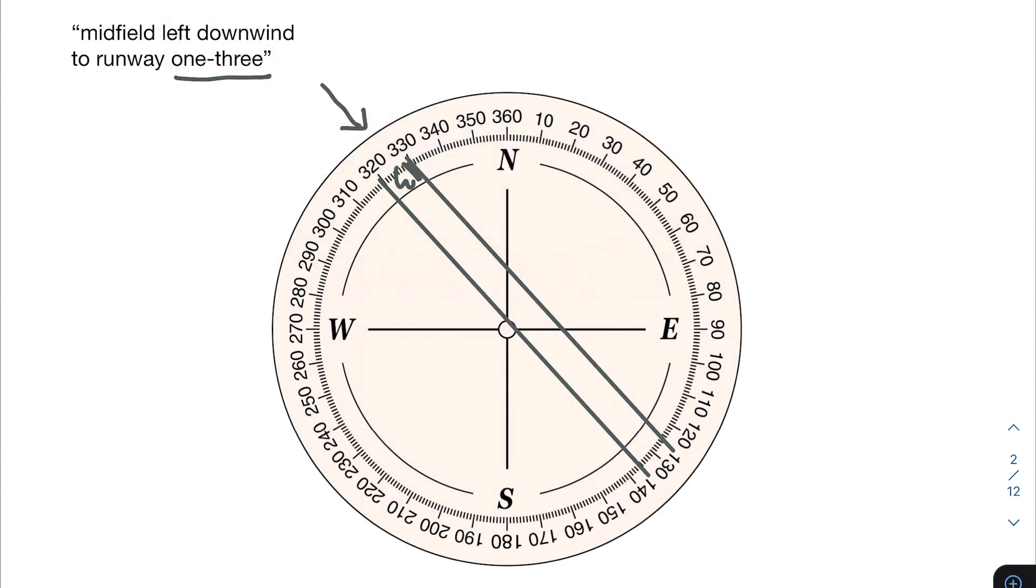As I mentioned before, here is our downwind leg. This would be our base leg. This would be our final leg. So if our plane is midfield left downwind, so midfield, remember that means that we're in the middle of the runway. We've got the same number of runway in front of us as we do behind us.